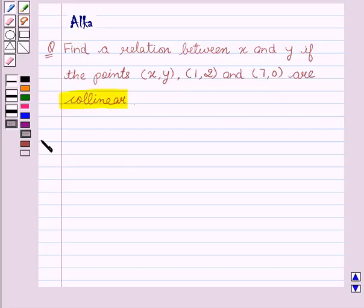Now let's begin with the solution. We are given in the question that the three points (x, y), (1, 2), and (7, 0) are collinear. Therefore, the area of the triangle will be 0 since no such triangle is possible with three collinear points.